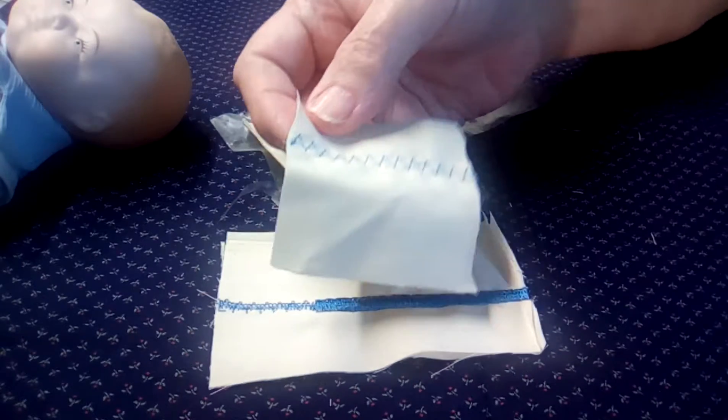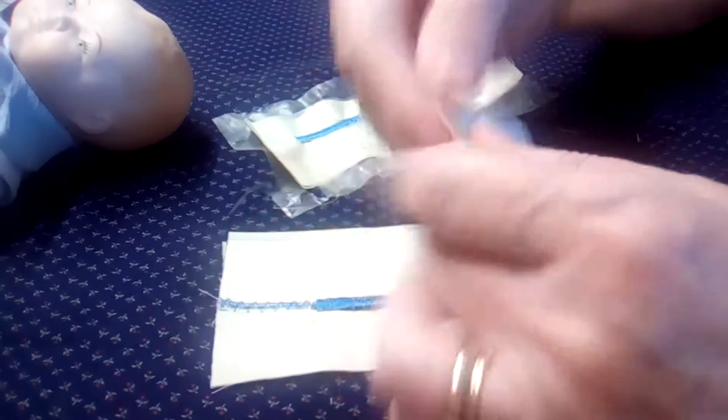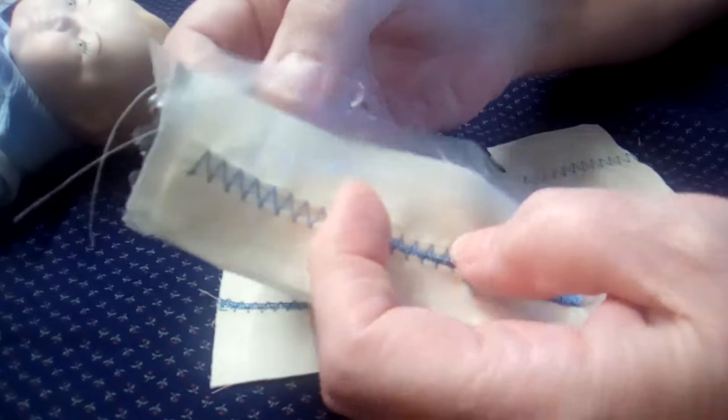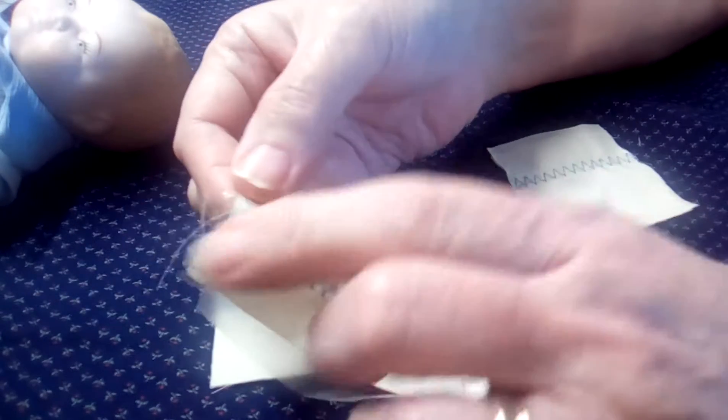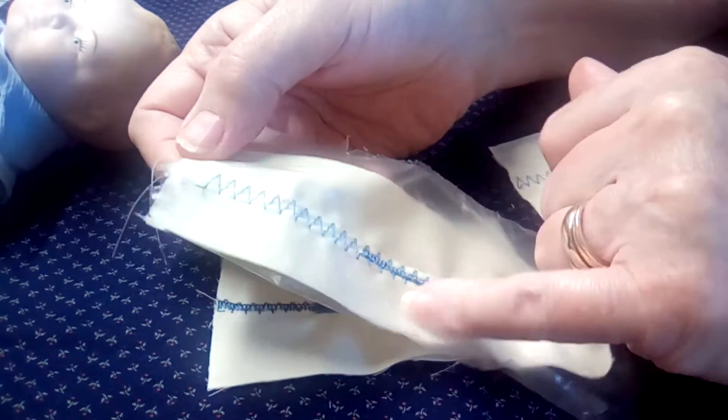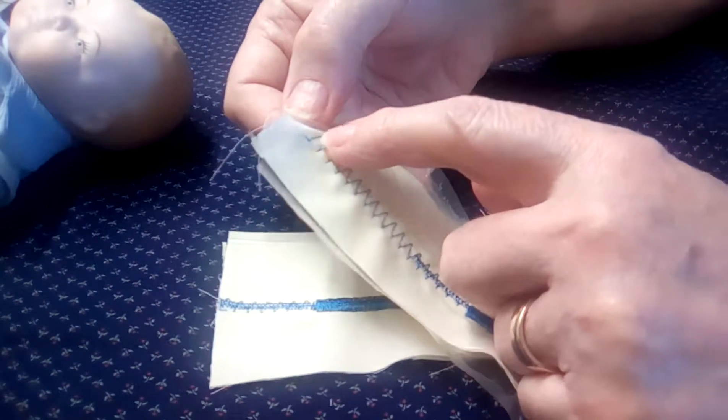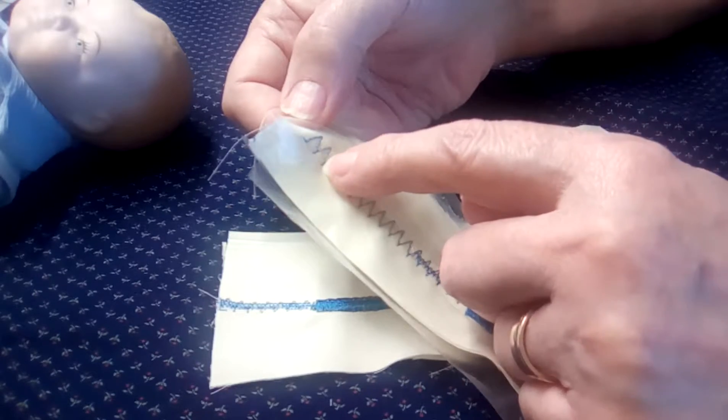So I found that if I took stabilizer backing in front of my fabric, stitched it with the zigzag stitch that goes three stitches forward, sews three stitches back and forth.